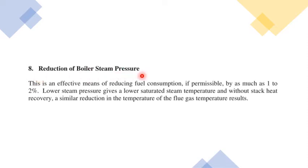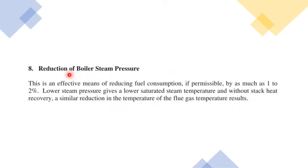The eighth point is reducing boiler steam pressure. In many industries, the steam pressure generated is higher than what is actually required. If you can reduce the steam pressure by even 1–2%, it leads to better boiler efficiency. Lower steam pressure gives a lower saturated steam temperature and a similar reduction in flue gas temperature. Unnecessary excess steam pressure generation only leads to energy loss.